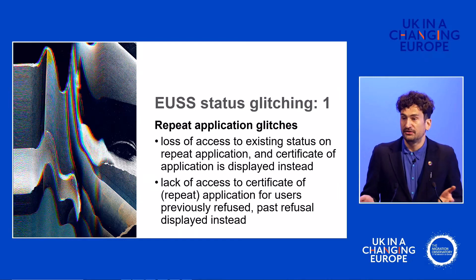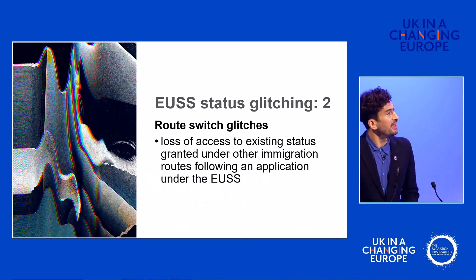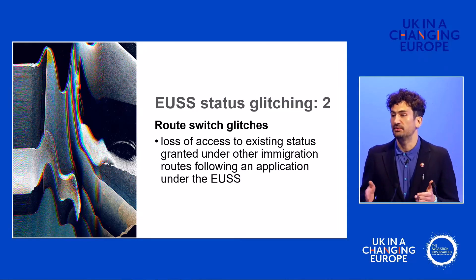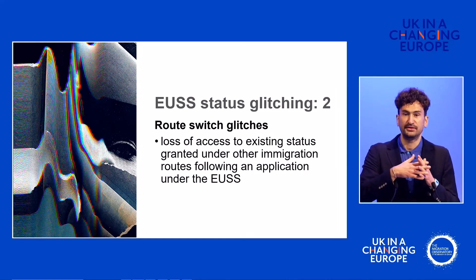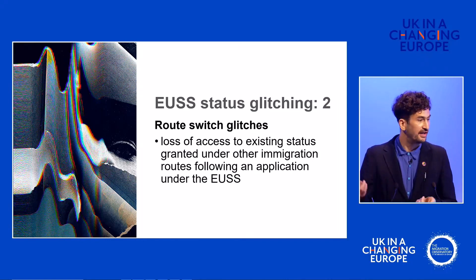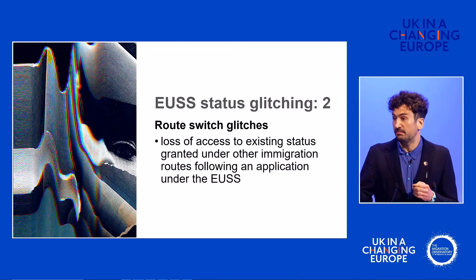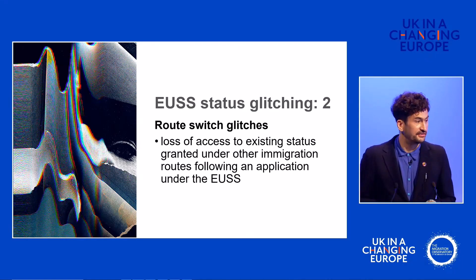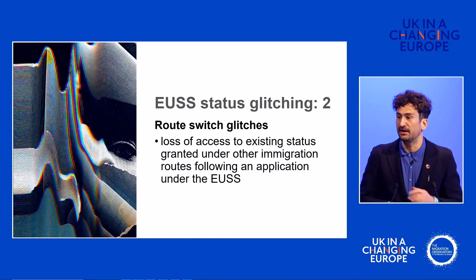There are glitches around multiple applications — for example, you have pre-settled status, you apply again, and you lose access to your pre-settled status and can only see a pending application. Last April, other immigration routes were brought into the scope of online status checks. We saw cases such as a person with a skilled worker visa with three years left who had become a durable partner of a new citizen, so applied under the EUSS because it's easier, cheaper, faster, and gives more rights in principle. That application was refused incorrectly, but before they managed to appeal, they had to evidence their status for a job. They went online and could only see the EUSS refusal — three years left on a skilled worker visa with no way to access that.